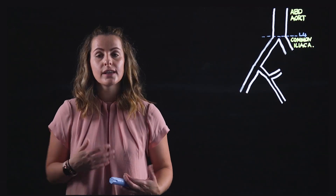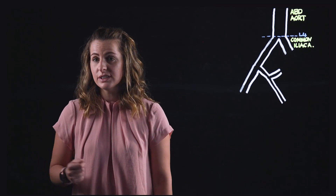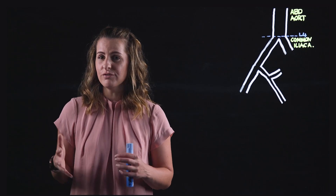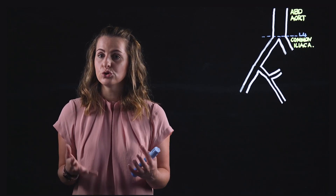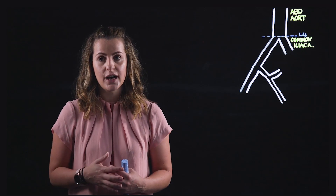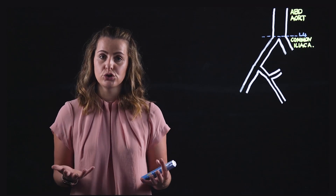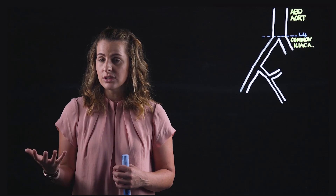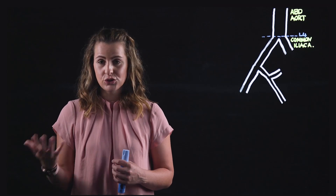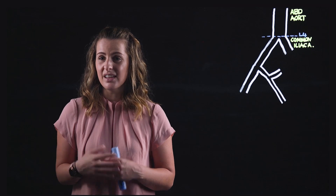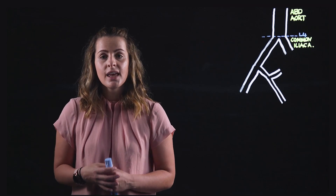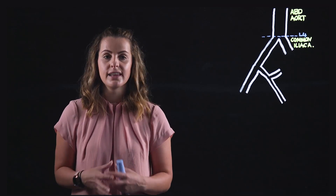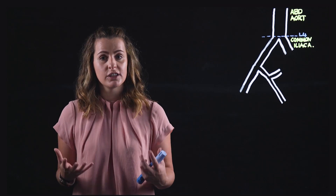Our common iliac arteries course over the brim of the pelvis and into the pelvic inlet. At approximately the level of L5-S1 we see bifurcation of the common iliac artery into the external iliac and the internal iliac artery. The external iliac courses out of the pelvis to supply the muscles of the lower limb predominantly, while the internal iliac remains within the pelvic inlet and lesser pelvis to supply the pelvic viscera.